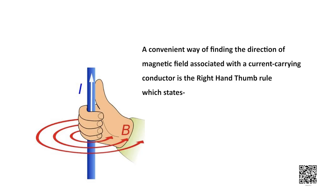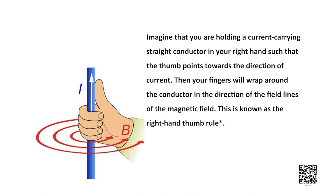A convenient way of finding the direction of magnetic field associated with a current carrying conductor is the right hand thumb rule, which states: imagine you are holding a current carrying straight conductor in your right hand such that the thumb points in the direction of the current. Then your fingers will wrap around the conductor in the direction of the field lines of the magnetic field. This is known as the right hand thumb rule.